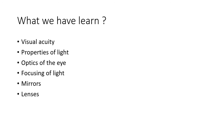Up till now we have learned about visual acuity, the properties of light, optics of the eye, how light is focused, mirrors — spherical mirror, concave mirror — and lenses: spherical and cylindrical, as well as convex spherical lens, concave spherical lens, and cylindrical lenses.